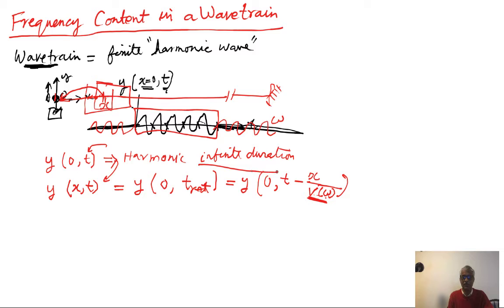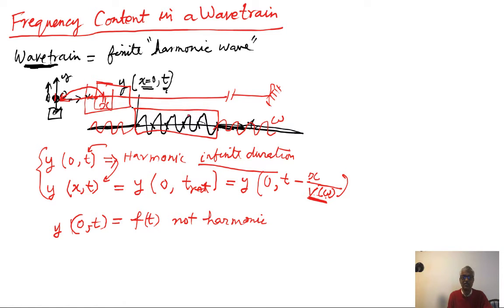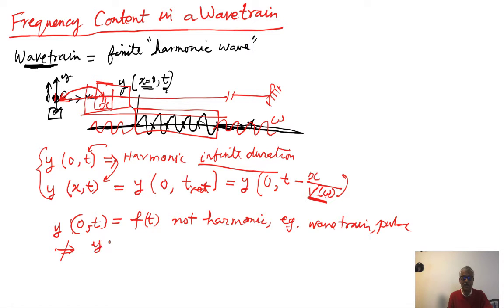If we have an infinite harmonic wave, we have that simple situation. But if we have a finite signal — which is the case here — then y(0, t) is some function f(t) that is not harmonic, because it doesn't go on forever. This is the case for a wave train or a pulse.